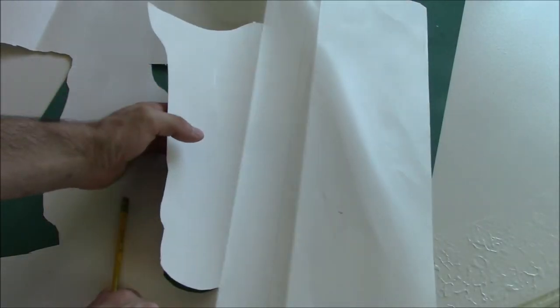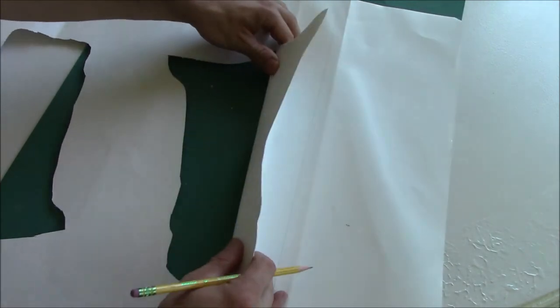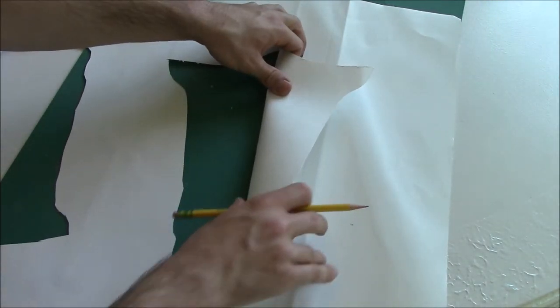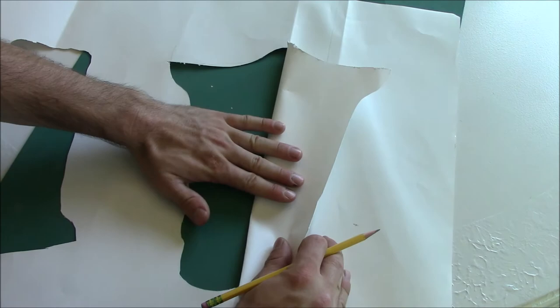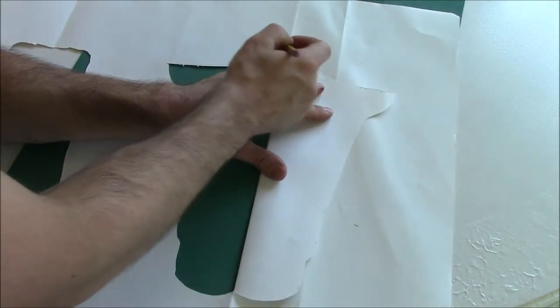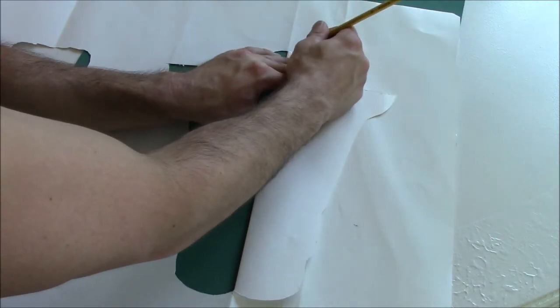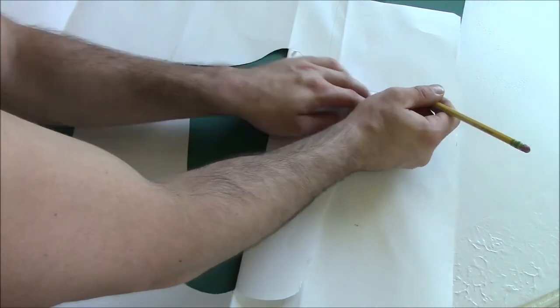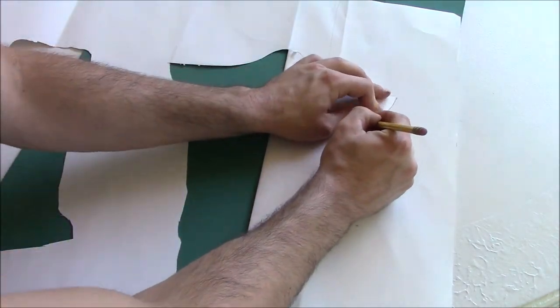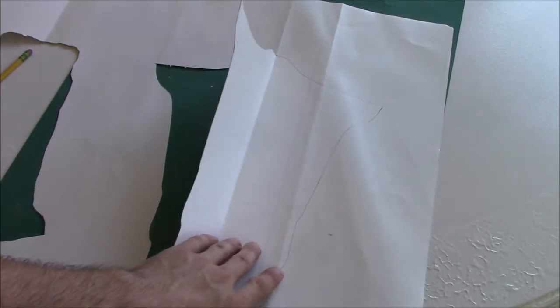We've got one side cut out. What I'm going to do now is just flip this paper over on the crease. And I'm going to trace this out on the other side. Here we go. We've got the other side traced out. We're going to go ahead and cut that now.